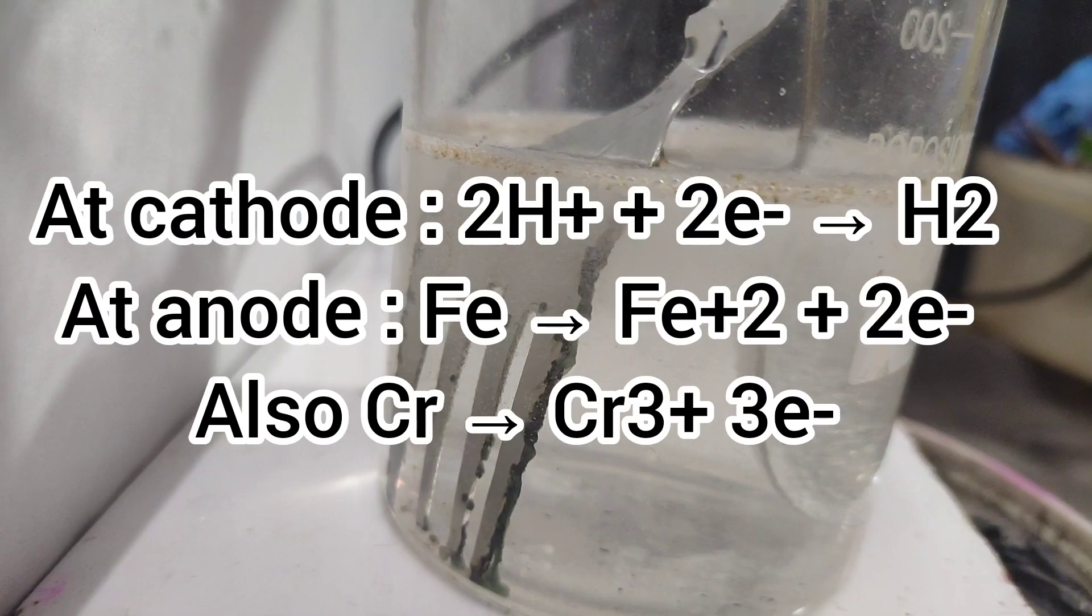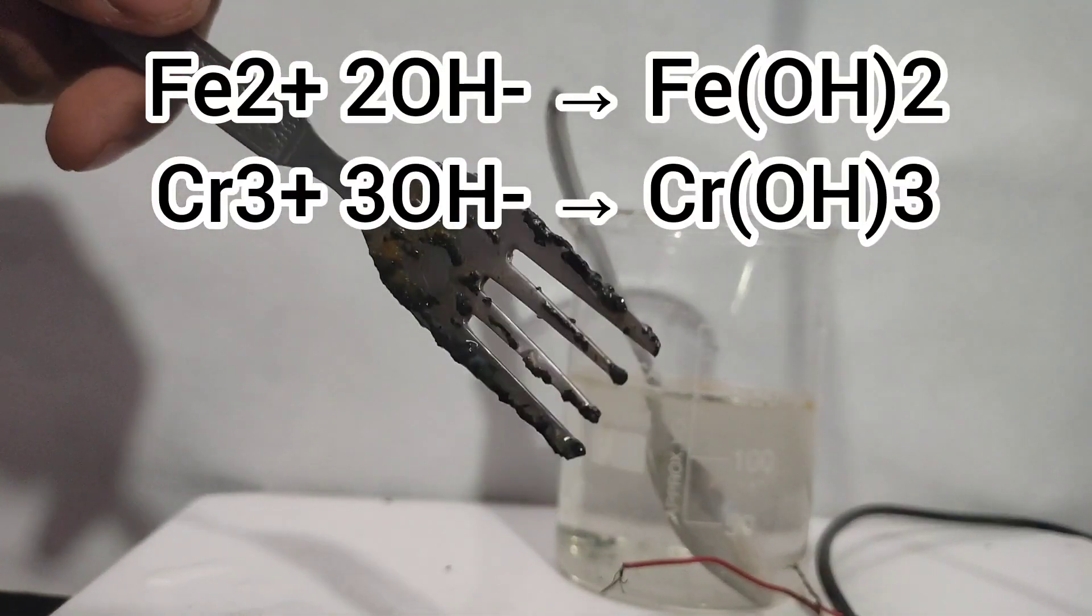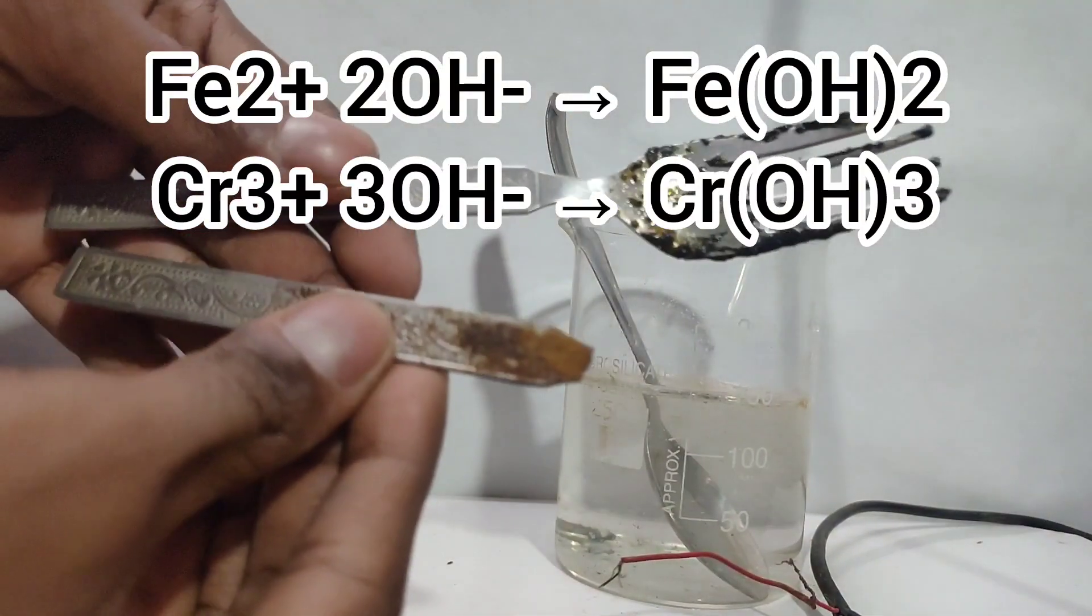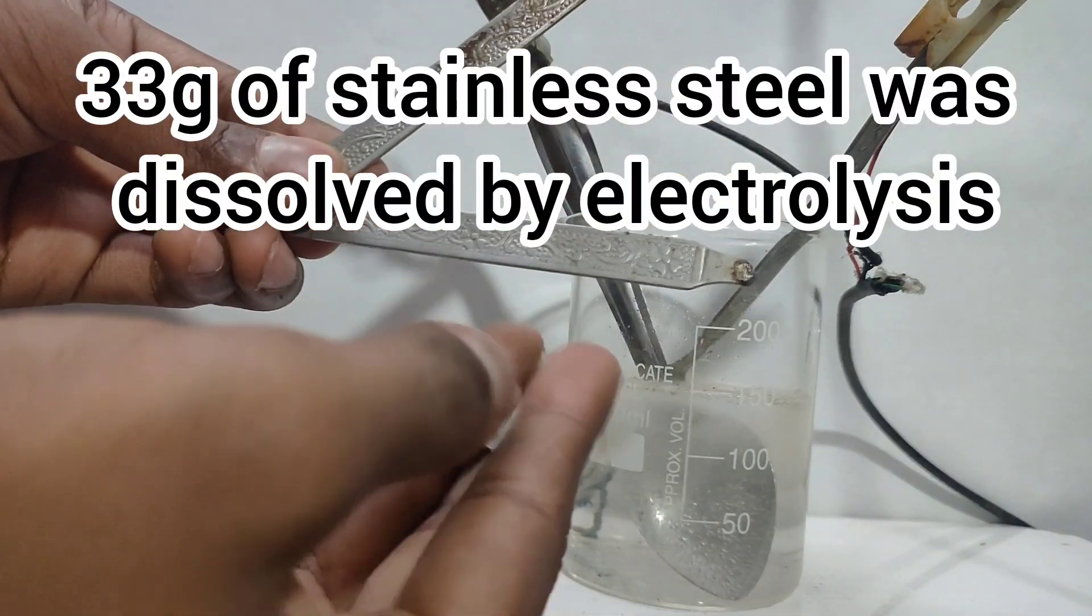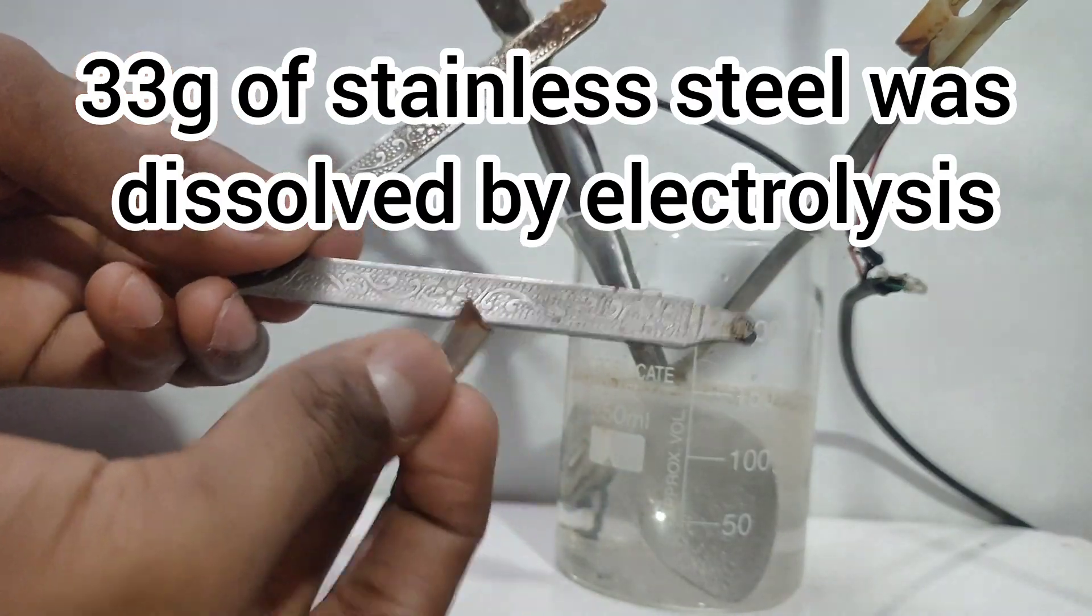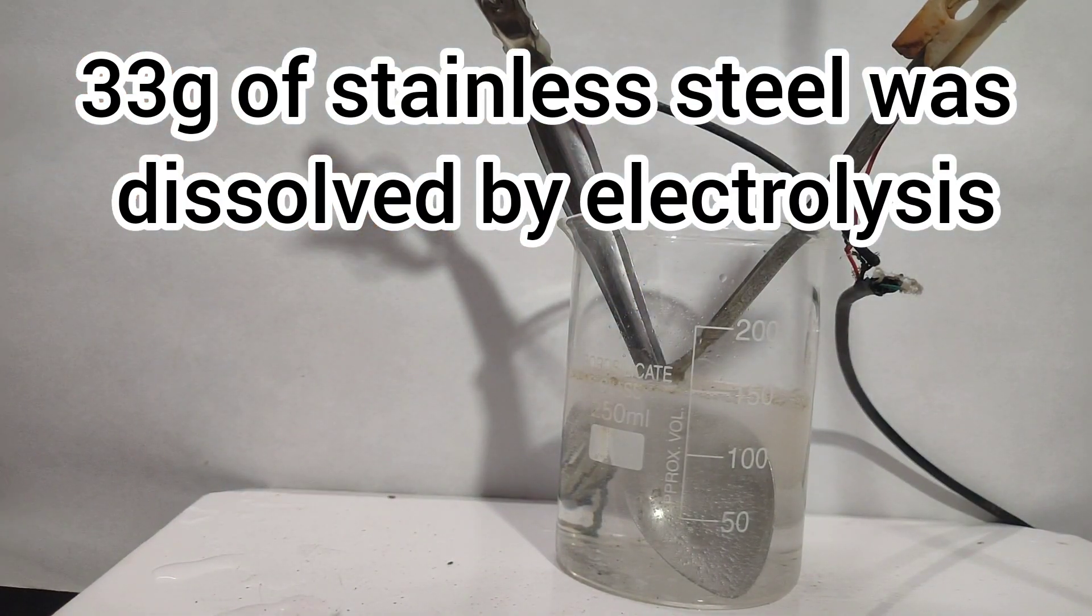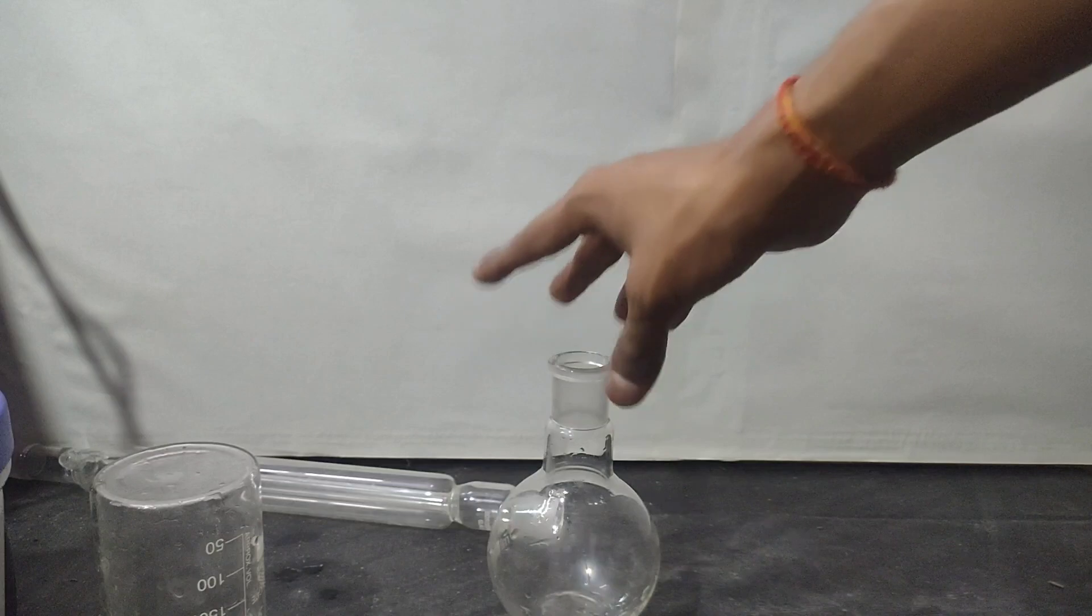The metal in the steel, which is iron and chromium, is oxidizing to their corresponding hydroxides. I have already dissolved two forkheads and one spoon by this method, which measures out to be 33 grams. I will show you the precipitate formed later in this video.